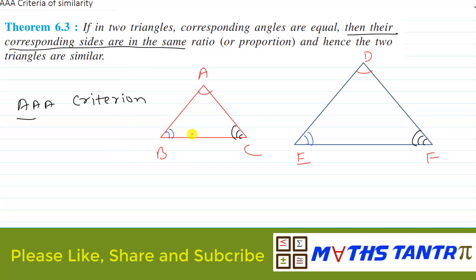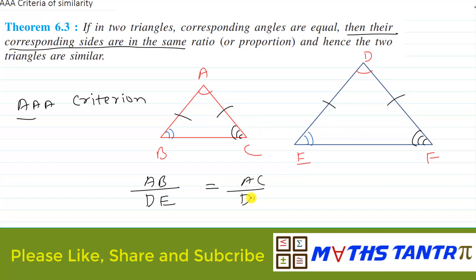The second statement of this theorem says: if two triangles are similar, their sides will be proportional. That is, AB upon DE equals AC upon DF, and AC upon DF equals BC upon EF.